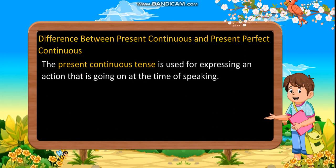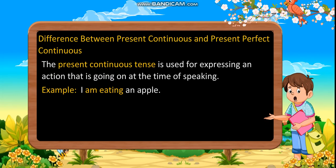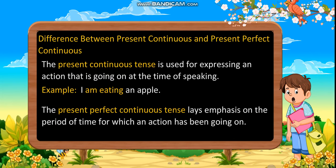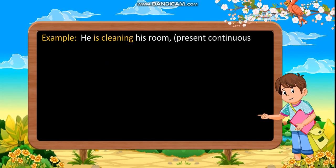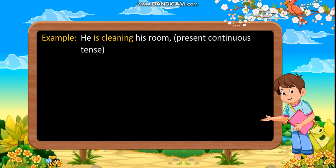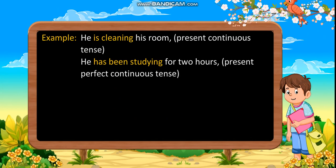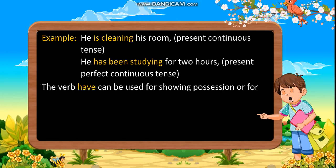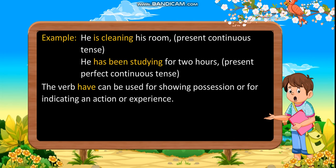Difference between present continuous and present perfect continuous: The present continuous tense is used for expressing an action that is going on at the time of speaking. Example: I am eating an apple. The present perfect continuous tense lays emphasis on the period of time for which an action has been going on. Example: He has been studying for two hours.